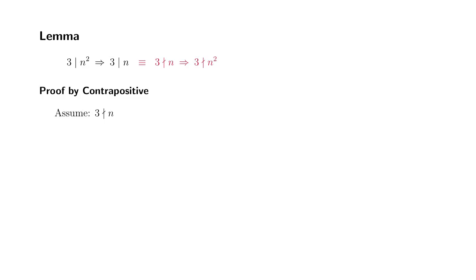Case 1 is going to be there exists some integer k such that n can be written as 3k plus 1. So you have a multiple of 3 and you have one extra. Case 2 would be remainder is 2. So case 2 would be there exists integer k such that n is equal to 3k plus 2.